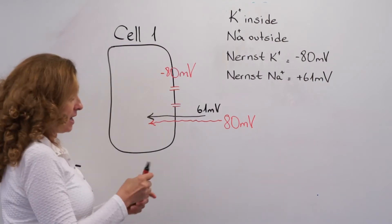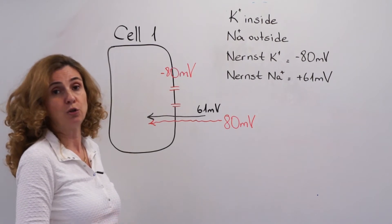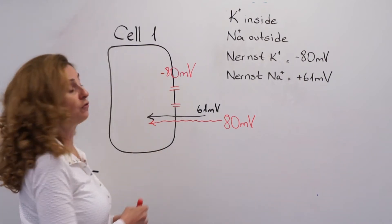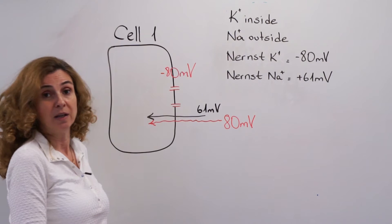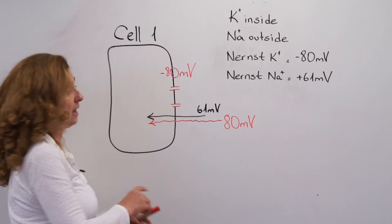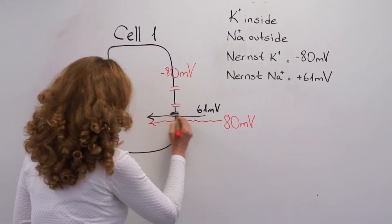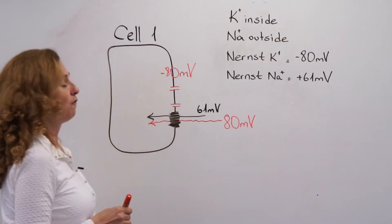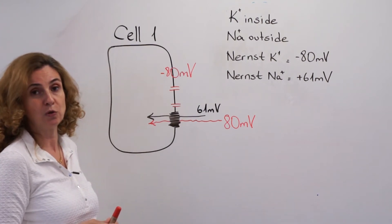Having a force is not enough — there are two conditions that are needed. One is a force, and we have a big driving force here. But the second condition, the presence of an ion channel, is not present in this cell. This cell has no channels through which sodium can move, so although there is a very big force pushing sodium into the cell, there will be no sodium movement.